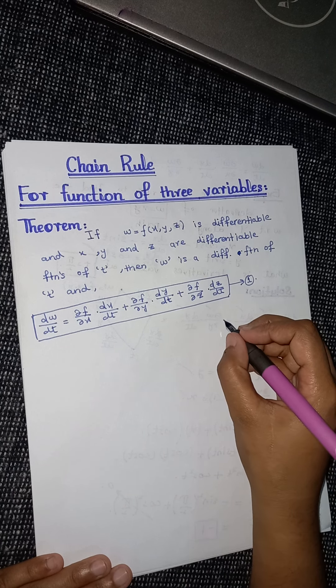In the same way we can write dy/dt and dz/dt. Now if you observe this diagram, to find dw/dt — the derivative of w with respect to the independent variable t — you start from here: write ∂w/∂x multiplied by dx/dt, add a plus sign, then multiply ∂w/∂y by dy/dt, and similarly add ∂w/∂z times dz/dt.